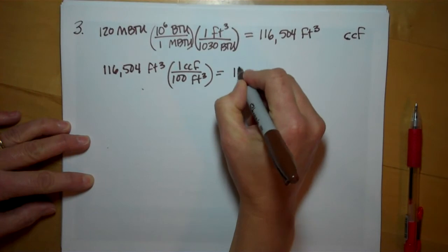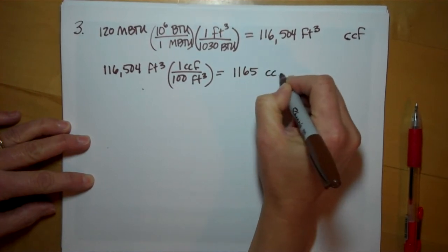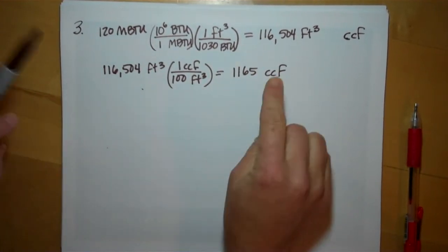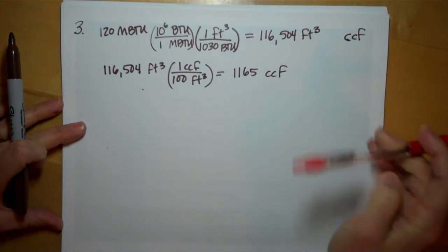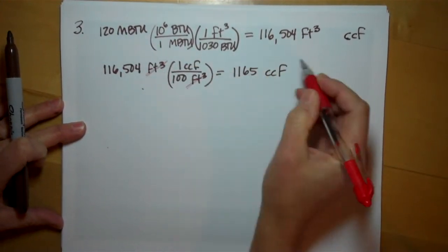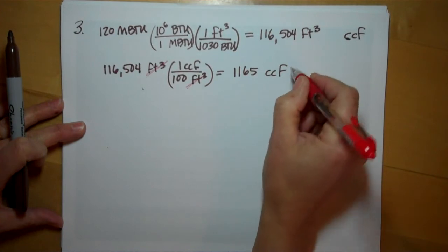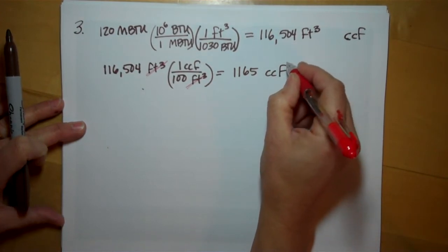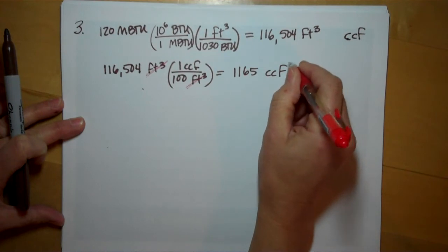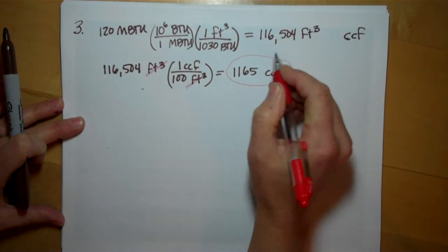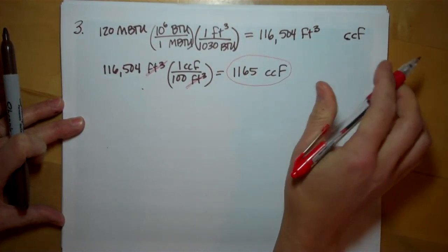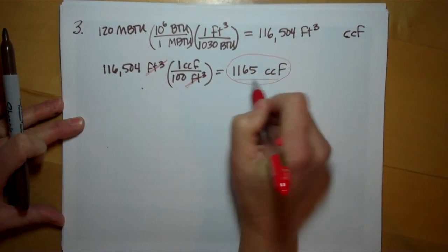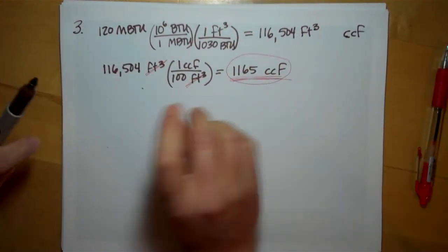So this is how many hundreds of cubic feet of natural gas we're going to need to purchase. The only problem is though, our furnace is only 60% efficient. So even though this is how much we need, we actually need to purchase more than this because so much is going to be lost to inefficiency.